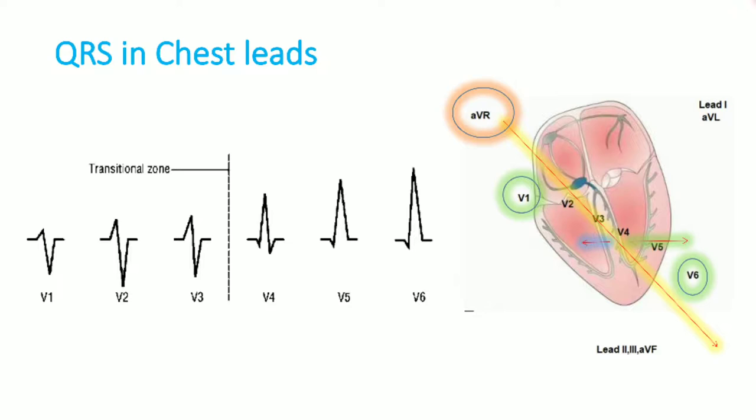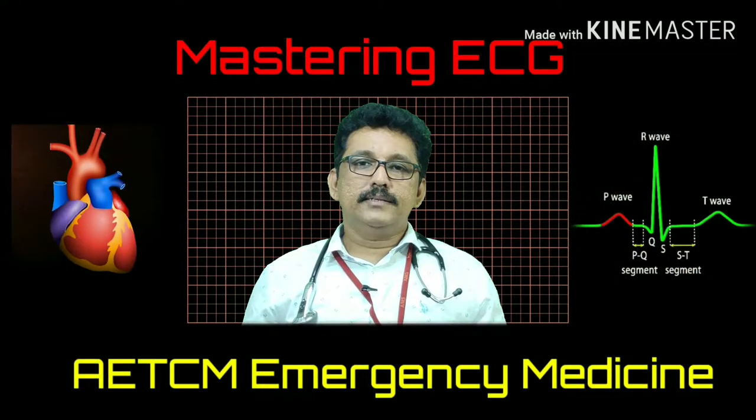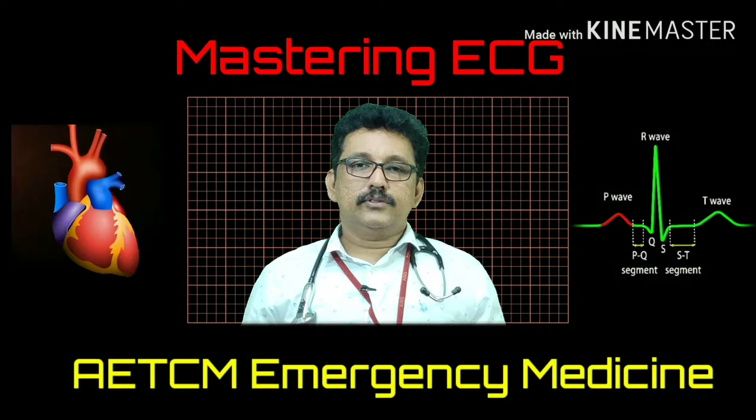In V6, the initial small current goes away from the vector giving a small Q wave, then the larger current comes toward V6 giving a larger R wave. In between V1 and V6, the height of the R wave gradually increases and the depth of the S wave decreases — this is normal R wave progression in chest leads.